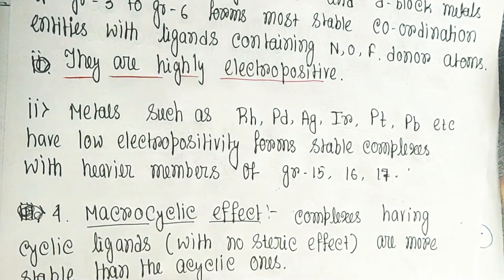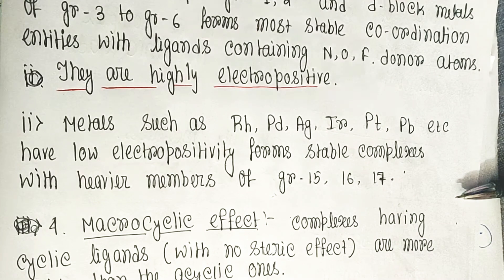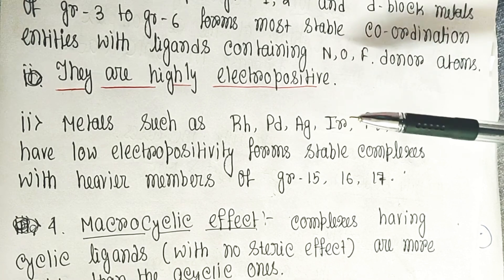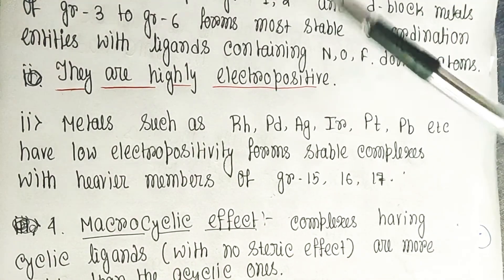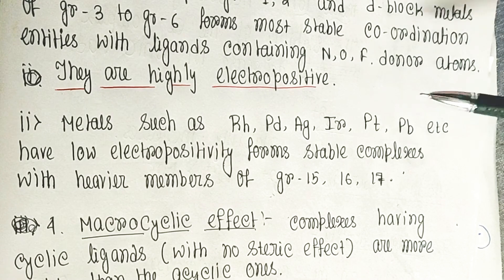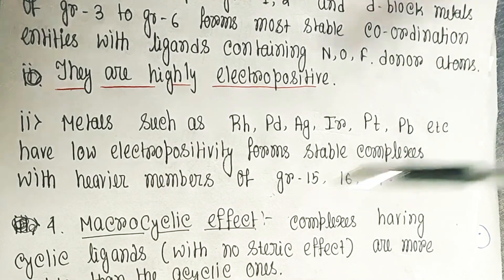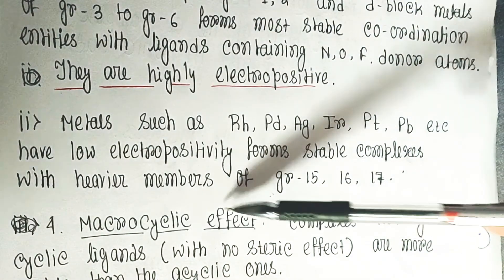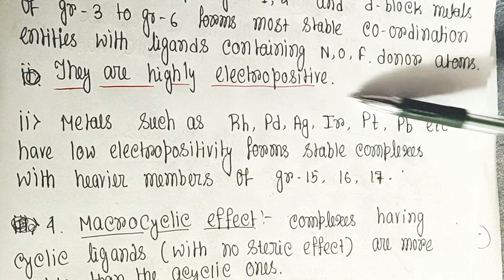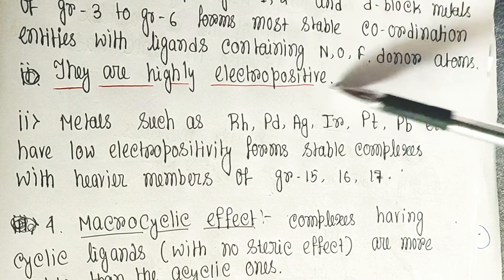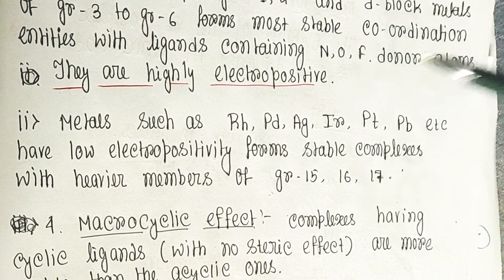Metals of the higher groups, such as rhodium, palladium, silver, iridium, platinum, and lead, have lower electropositivity. Therefore, they form stable complexes with less electronegative elements — specifically with the heavier members of Groups 15, 16, and 17 — because those heavier members have lower electronegativity values.